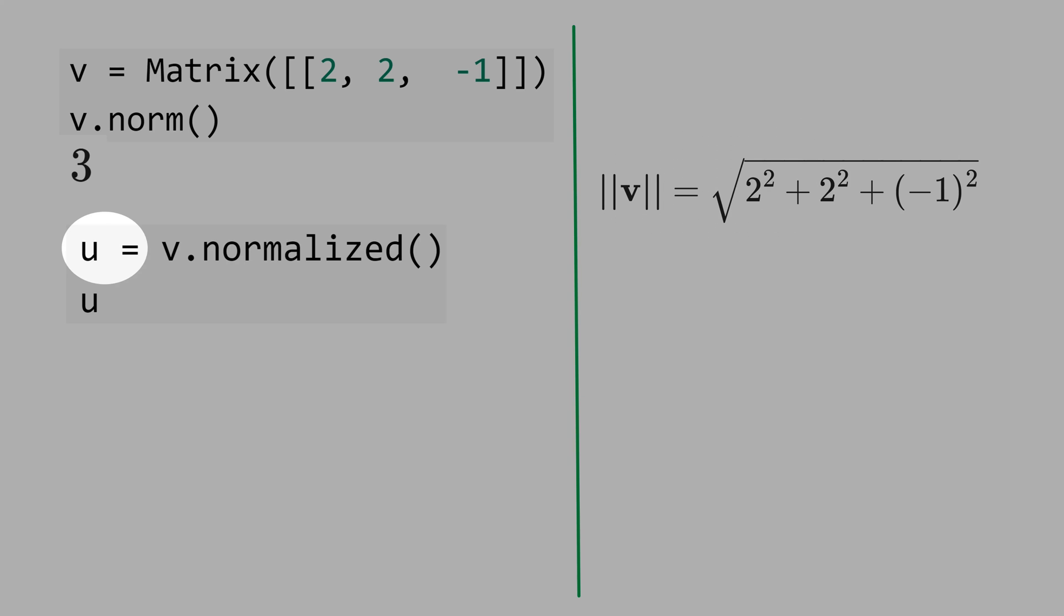Now let's define the vector u that is equal to v normalized. And this is the result: the vector v divided by the norm, by 3.